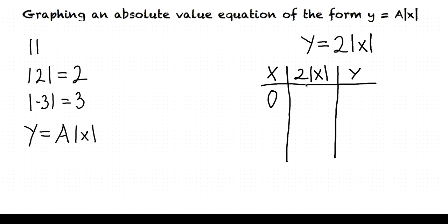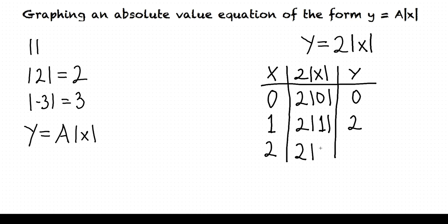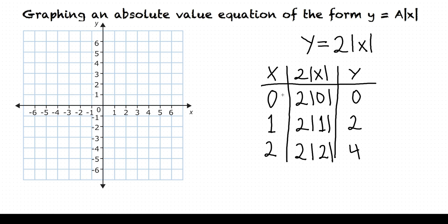If x equals 0, then 2 times the absolute value of 0 equals 2 times 0, which is 0. If x equals 1, then 2 times the absolute value of 1 equals 2. And if x equals 2, then 2 times the absolute value of 2 is 4. Let's graph what we have so far. Our first point is (0, 0), next we have (1, 2), and we have (2, 4). So far this looks like a regular linear equation with slope 2.